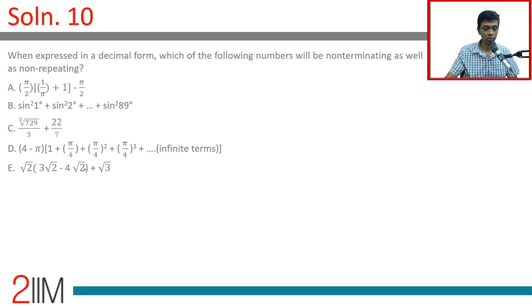Option E: √2(3√2 - 4√2) + √3. This is √2(-√2), which equals -2, plus √3.